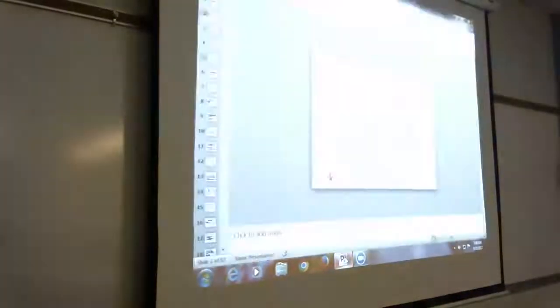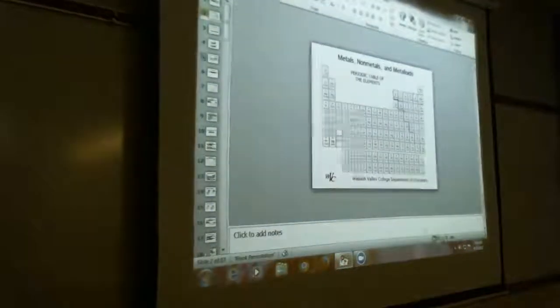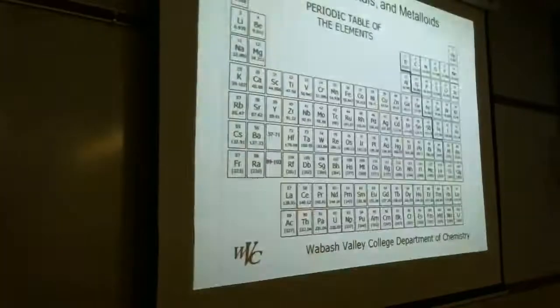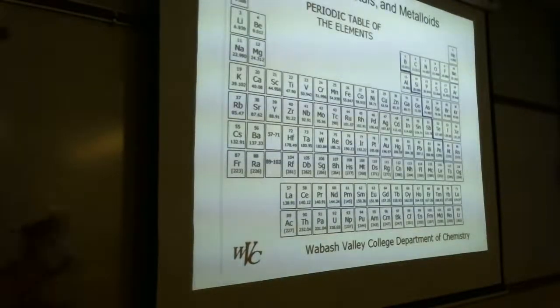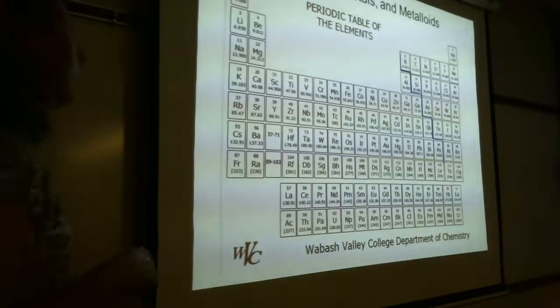Today we're going to be talking about nomenclature — specifically, we're going to name ionic compounds. Let's begin by looking at the periodic table.